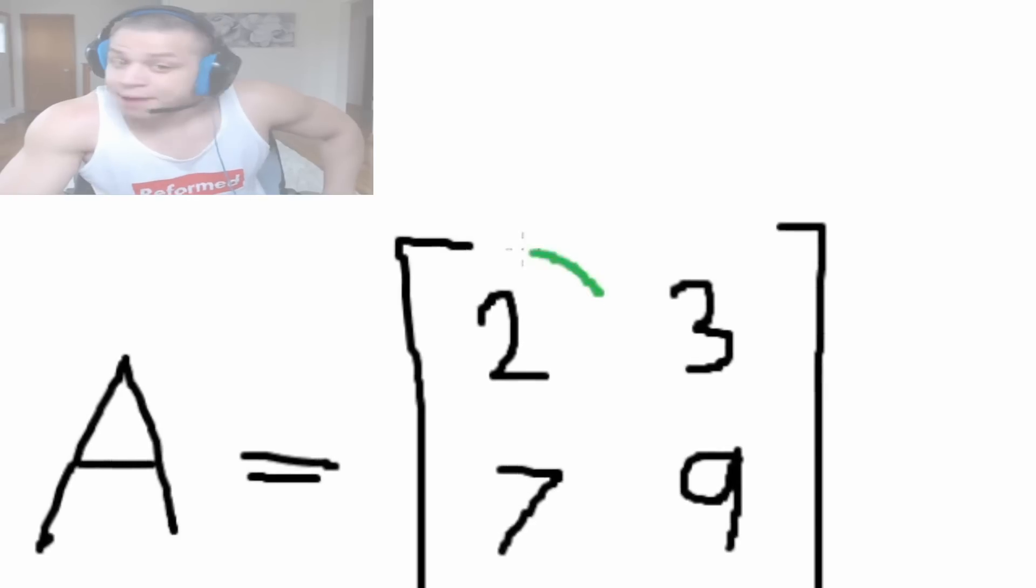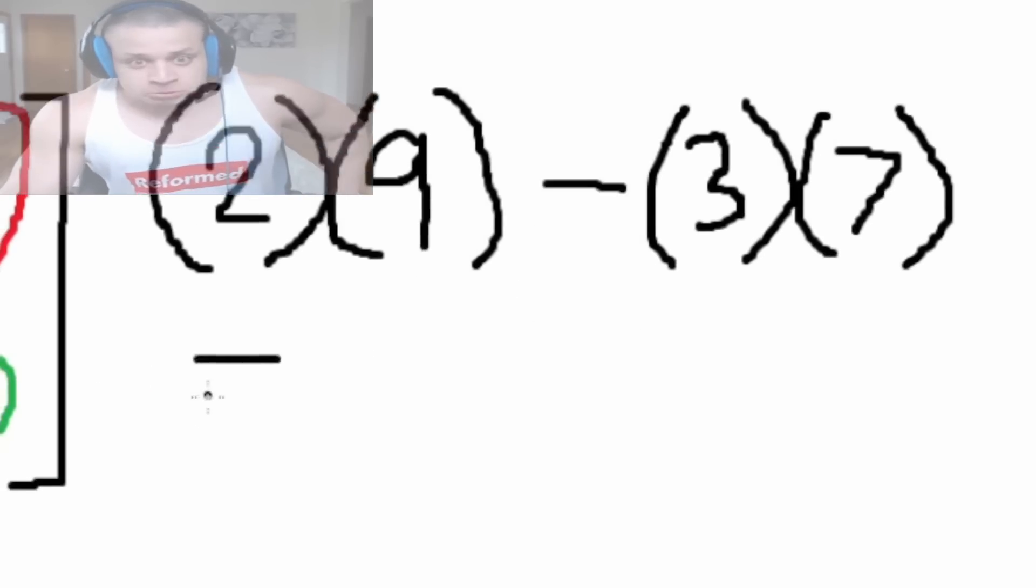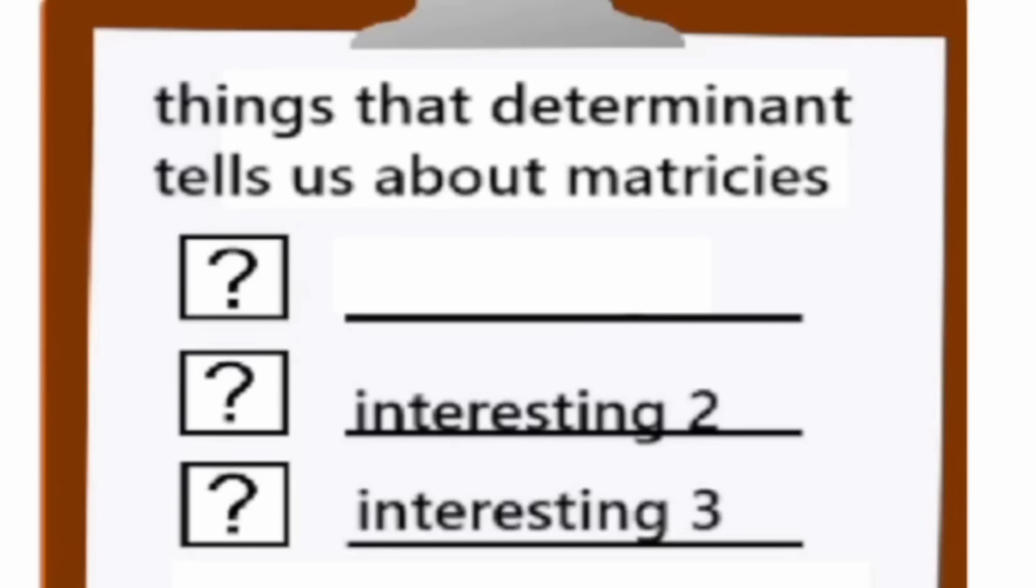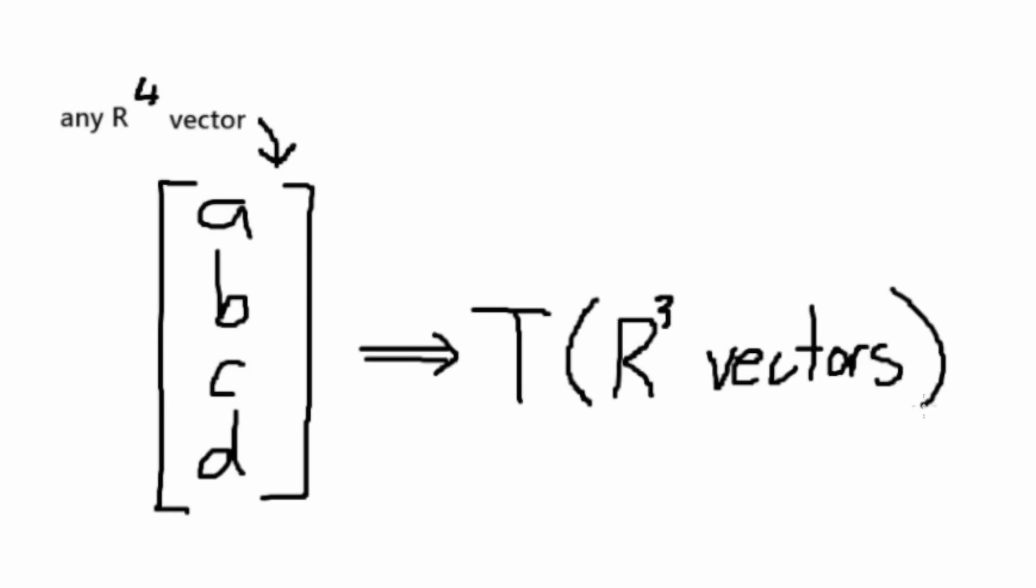Let's find the determinant of this matrix A equals 2, 3, 7, 9. Cross multiply starting from the top left to the bottom right, and then subtract that from the other product. 2 times 9 minus 3 times 7 equals negative 3. Great. So, now we know it has an inverse, we also know that the image is the whole codomain. That is, any possible vector of R4 can be created by the transformation of R3.